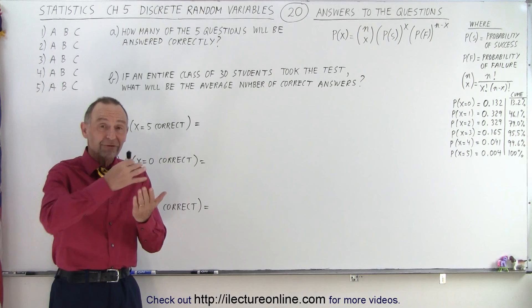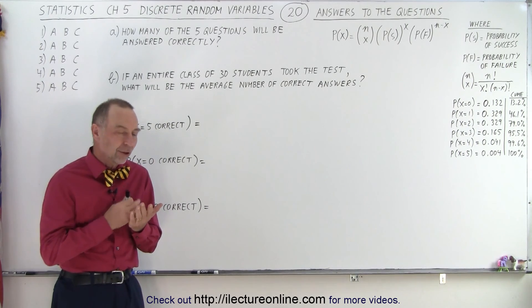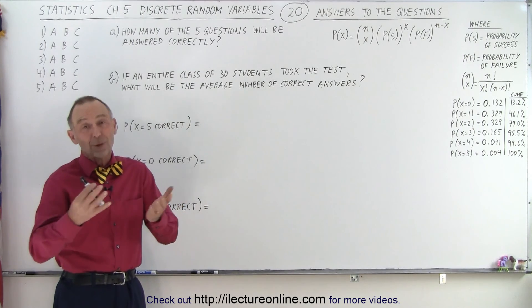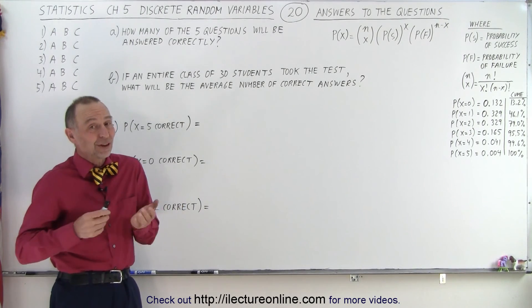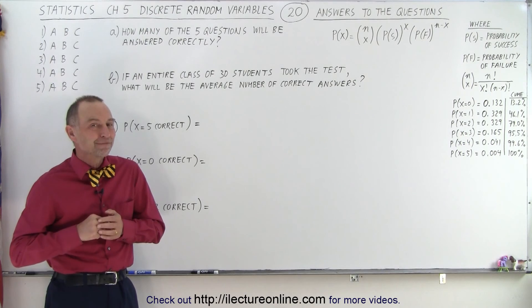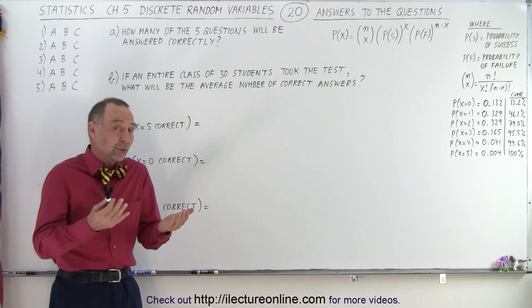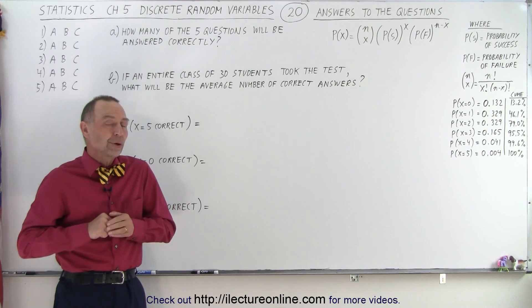We had a test with five questions on the test, three possible answers for each question. And we were supposed to take the test without reading the questions and reading the answers, essentially just purely guessing. And so we were interested in what would be the probability that we'd get one question right or two questions right or so forth.